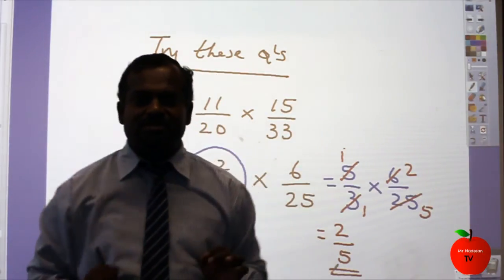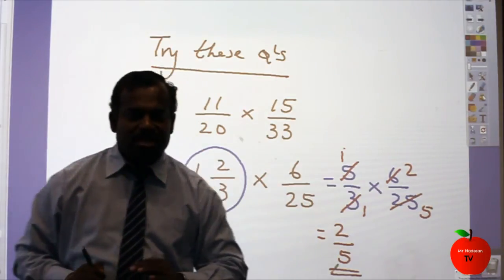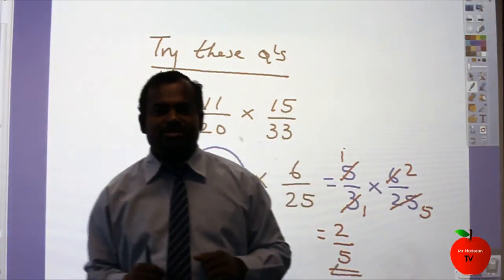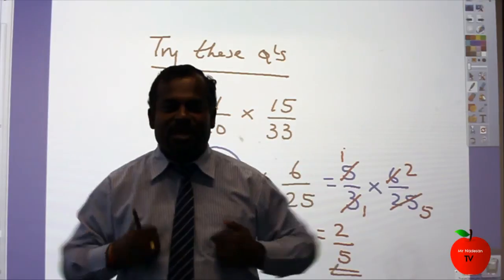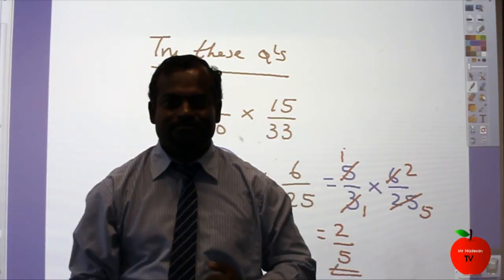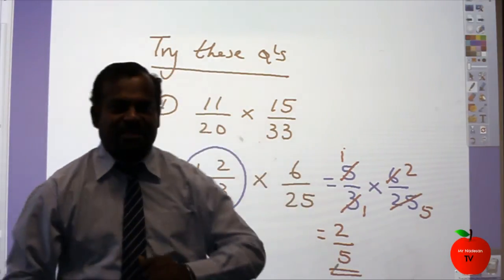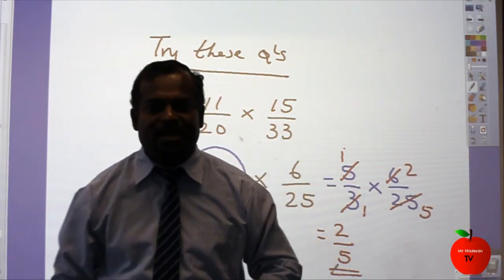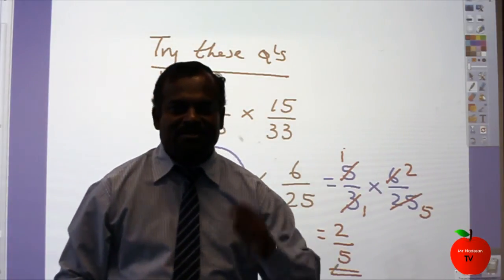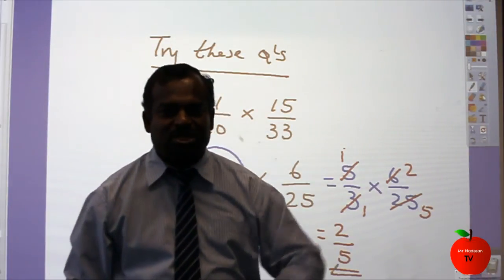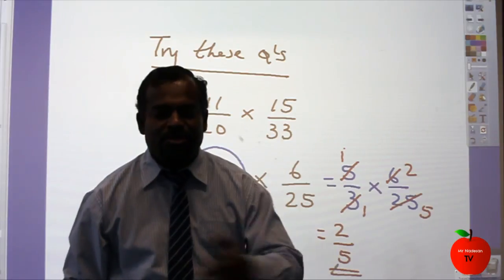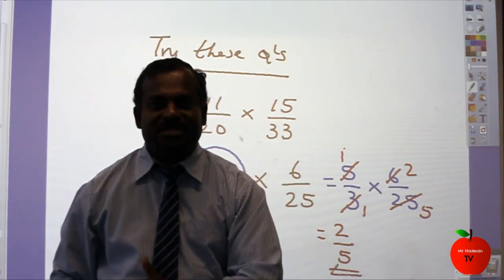When you do multiplying fractions: first, if you've got any mixed numbers, convert to the improper fractions. Then simplify using top, bottom, then cross. I think you've enjoyed multiplying fractions — I'm 100% sure you can do any multiplying fractions. Thank you for watching. This is Madison TV. Next time I'll do factorising for B and A grade work. Thank you — see you in the next lesson. Bye!